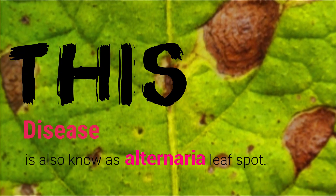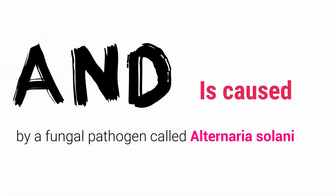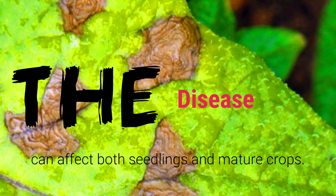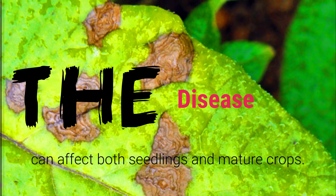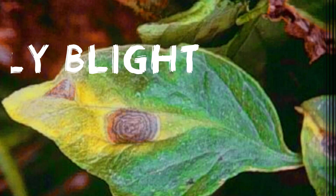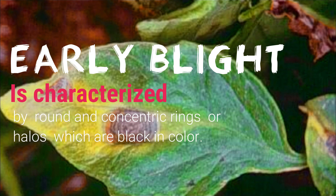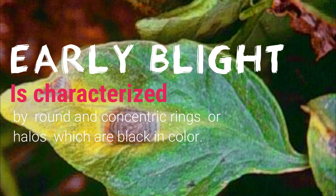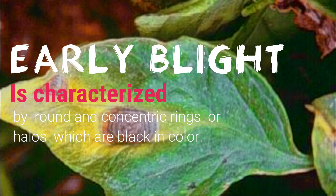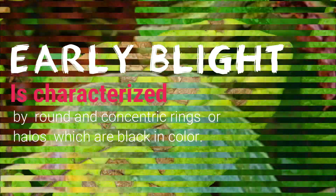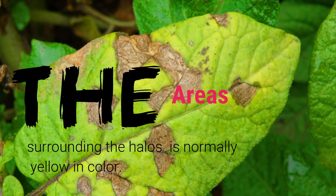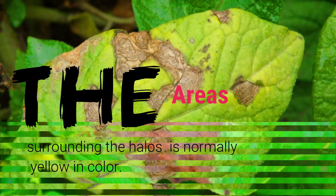We'll start with early blight. This disease is also known as alternaria leaf spot and is caused by a fungal pathogen called Alternaria solanaee. The disease can affect both seedlings and mature crops. Early blight is characterized by round and concentric rings, or halos, which are black in color. The area surrounding the halos is normally yellow in color.